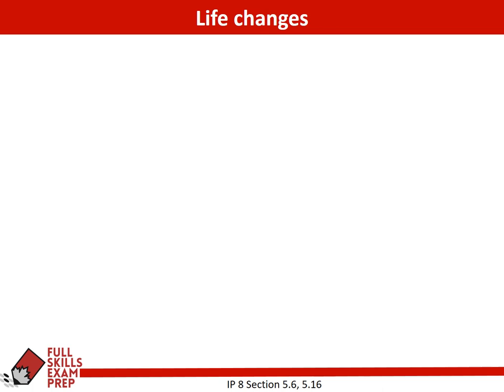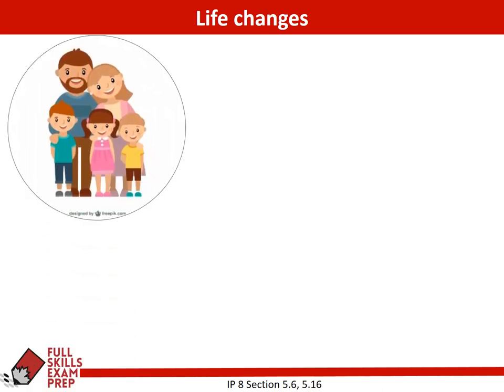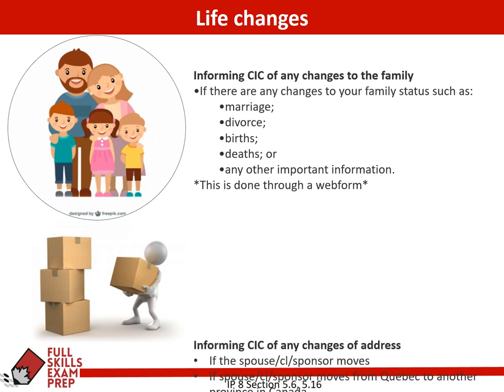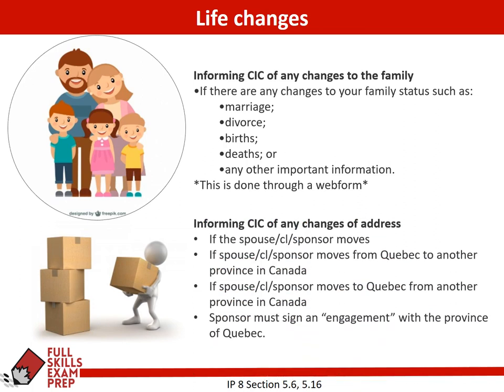Another element that plays a role in all immigration streams is when someone's life changes. Anytime someone has a birth in the family, someone passes away, someone gets married or divorced, they always have to update CIC. If they fail to do so, later on when the person wants to sponsor that other person, they probably weren't declared and would not be admissible. Same thing with changes of address — if pretty much anybody moves to a different province or to or from Quebec, they have to inform CIC of any changes.